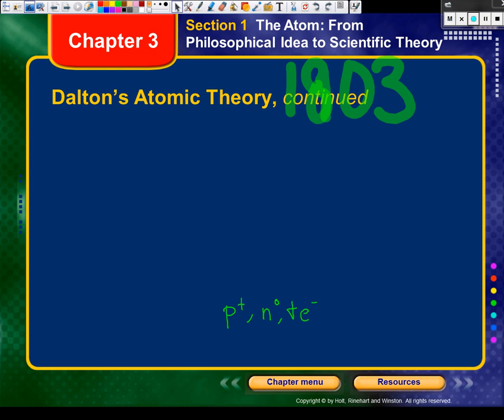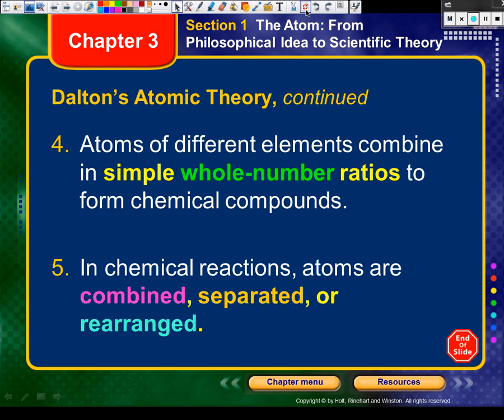The last two of Dalton's postulates. Number four: atoms of different elements combine in simple whole number ratios to form chemical compounds. True or false? That is true — you will never see a decimal number in a chemical formula. Number five: in chemical reactions, atoms are combined, separated, and rearranged. True or false? In a chemical reaction, atoms can come together to make new things, be broken down, or swap places. That is true. That's exactly what a chemical reaction is.